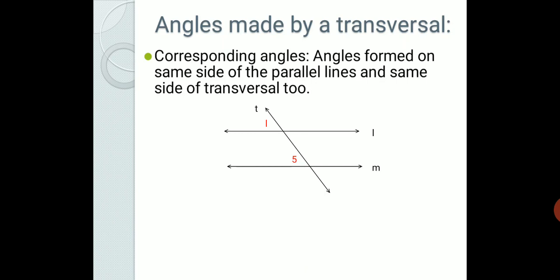Similarly, there are three more pairs of corresponding angles. Angle 2 and angle 6 are above the parallel lines and on the right-hand side of the transversal. The third pair is angle 4 and angle 8 — they are below the parallel lines and on the left-hand side of the transversal. The last pair is angle 3 and angle 7, which are below the parallel lines and on the right-hand side of the transversal.